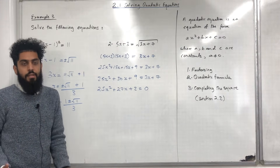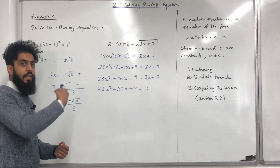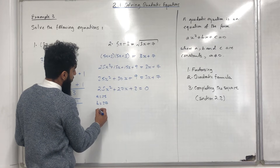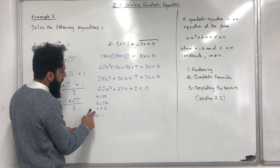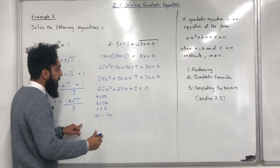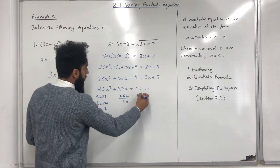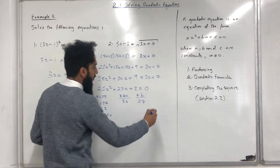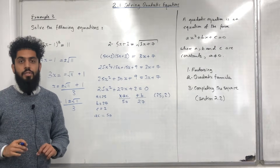By factorising, first state A, B and C. A = 25, B = 27, C = 2. Work out AC = 25 × 2 = 50. We need two numbers that multiply to give 50 and add to give 27. Those numbers are 25 and 2: 25 × 2 = 50, 25 + 2 = 27. Now I can use 25 and 2 to split the 27X.